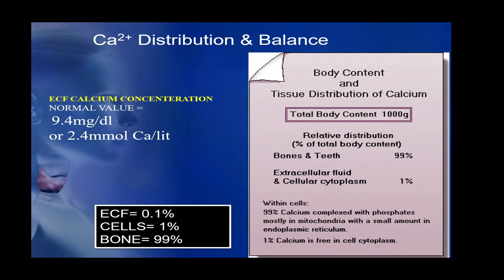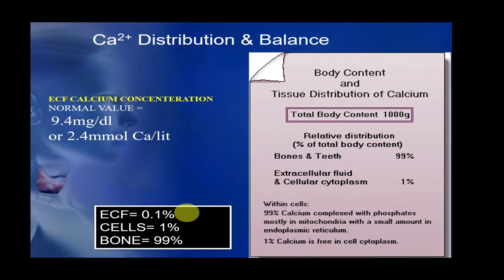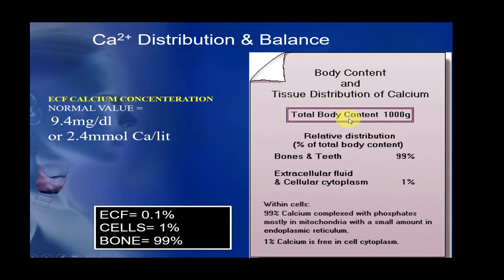First of all, we have to study calcium distribution and how it is balanced. The calcium concentration in the ECF is about 9.4 milligrams per deciliter or 2.4 millimoles per liter. The main reservoir for calcium is bone, which constitutes 99 percent of total body calcium. One percent is found intracellularly and only 0.1 percent is found in the ECF. Total body calcium content is about 1000 grams.